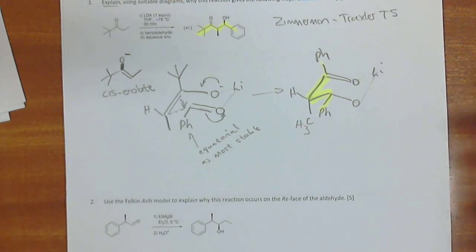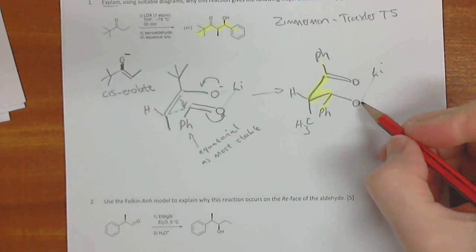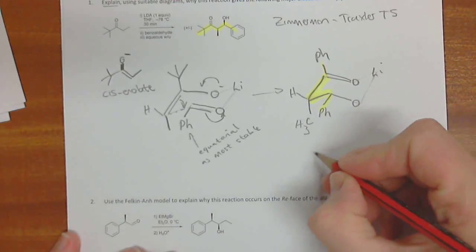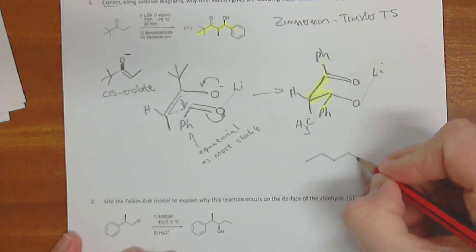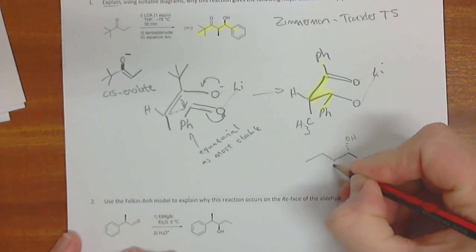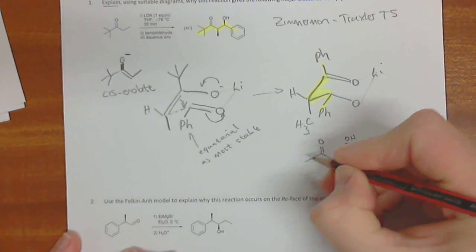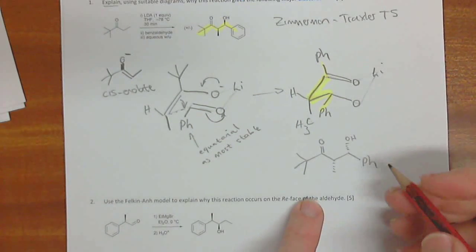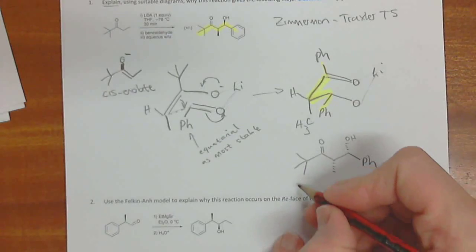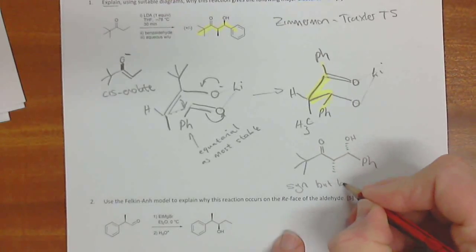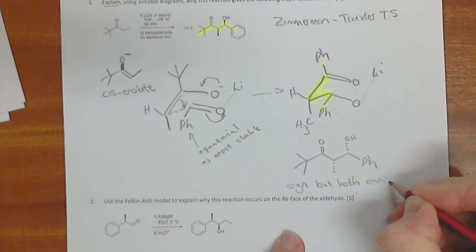And we can see that both this and this on the same side, they're both facing down in this. So actually, the product, as we would draw it out, would, there's the phenyl, would actually look like OH down. And the methyl group would be down. So this would be the correct one that gets drawn out. And then you'd say, syn, but both enantiomers formed.